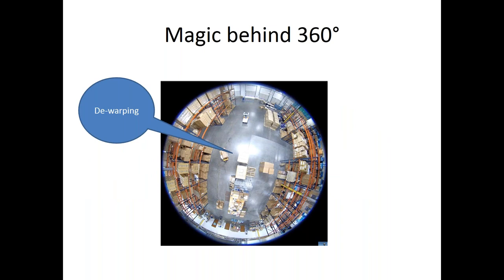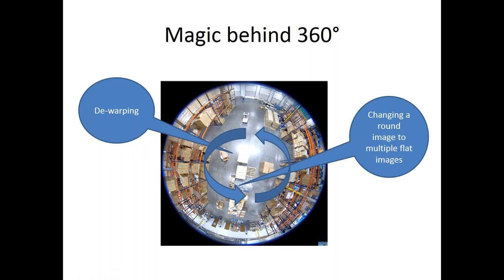The magic behind the 360 is not just fish-eyeing an image to cover a vast area — it's the dewarping aspect. Looking at the round, warped image and extracting multiple flat subsets from it. The tools that allow dewarping are what we're going to explore in detail. But first, let's look at the resolution chart to put the ranges in perspective on what to expect.